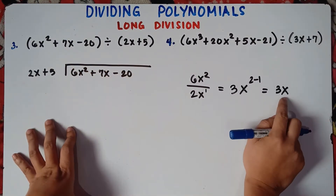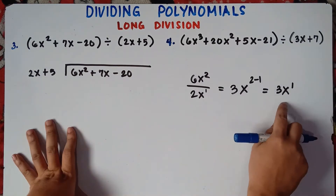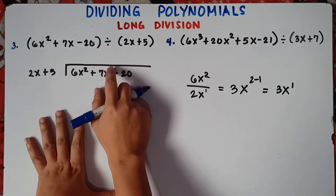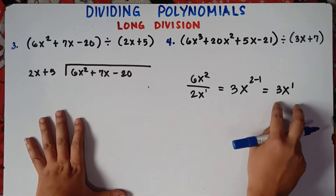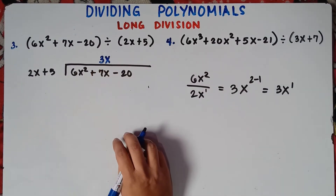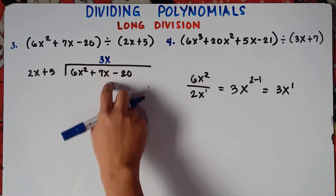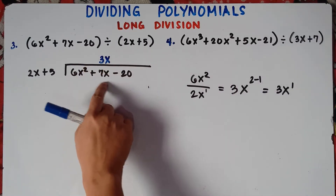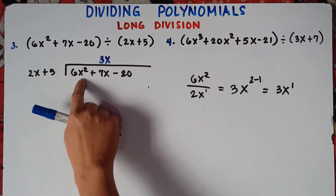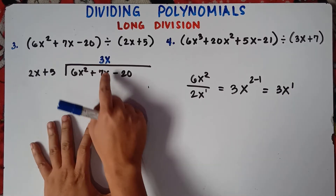Now, since this is 3x, with x to the exponent of 1, you align it with 7x, because 7x also has an exponent of 1. So always align, class. Always remember: once you divide, if the result is x squared, you align it with x squared. Since this is just 3x, you align it with 7x.